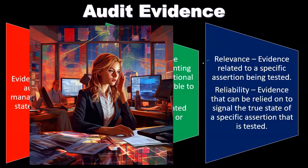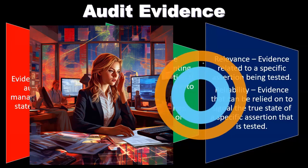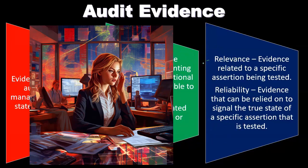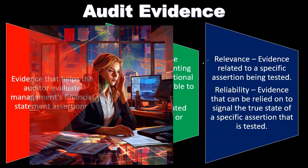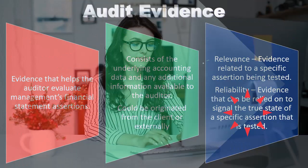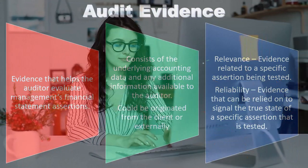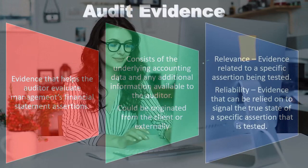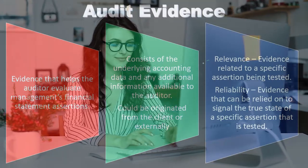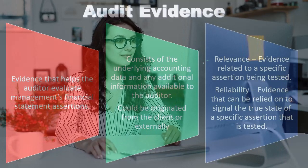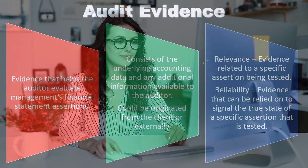You need to know the specific assertion in order to test it well and do the job properly. When we think about relevance, we're thinking about evidence related to a specific assertion. A specific assertion is not simply whether the financial statements are in accordance with GAAP — that's the general overall process. A specific assertion would be something like existence, accuracy, or correct reporting. You can't create one test for the entire set of GAAP rules; you need to get into the specifics.